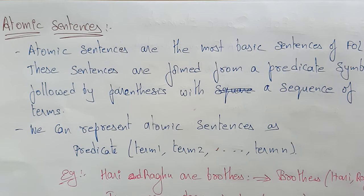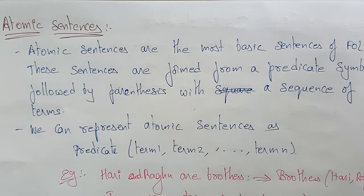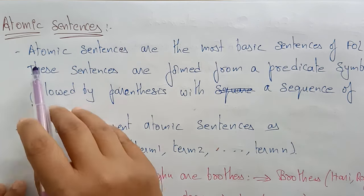Now let's see the sentence. In first-order logic, a sentence can be represented as an atomic sentence or a complex sentence. So what is an atomic sentence and what is a complex sentence? Let's see.